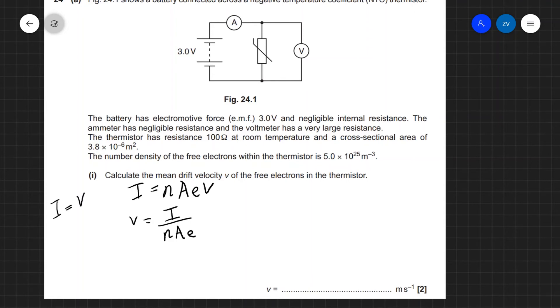and just say that I is equal to V over R which is going to equal to 3.0 divided by the resistance which is 100 which is going to give us 0.03 amps. Okay now we're ready to substitute this back into our main equation.